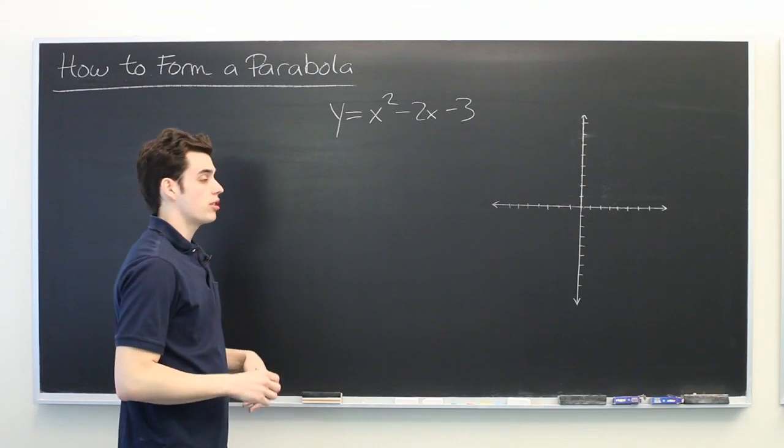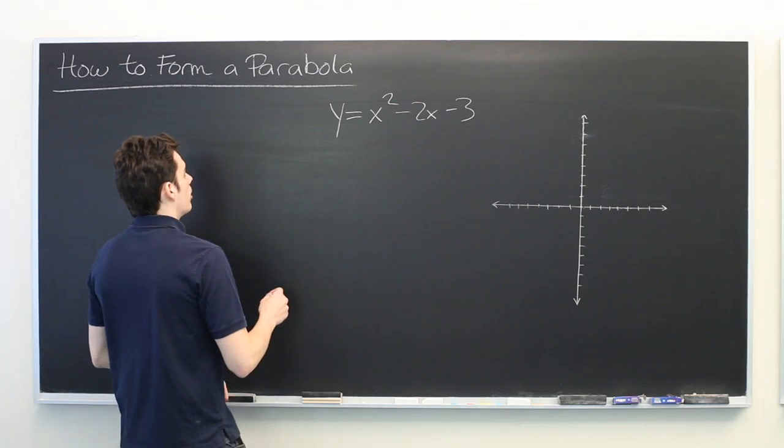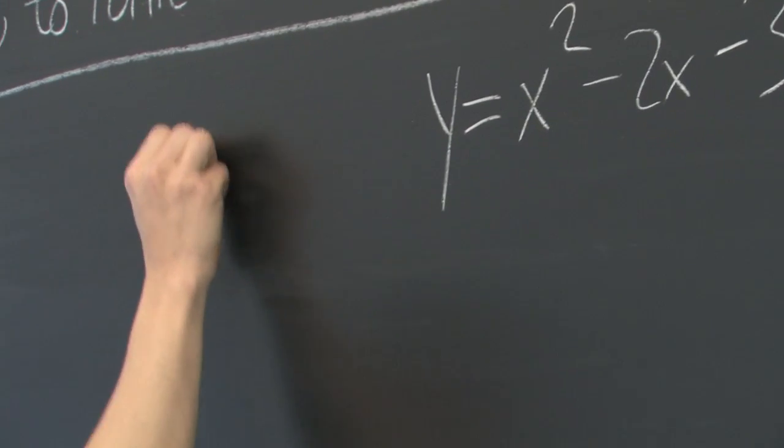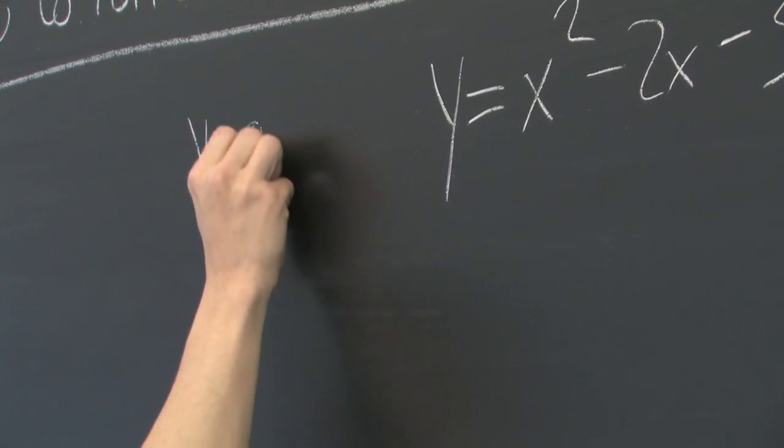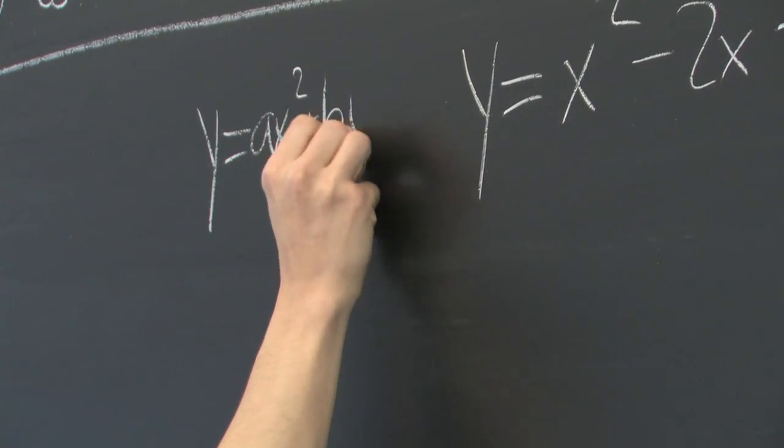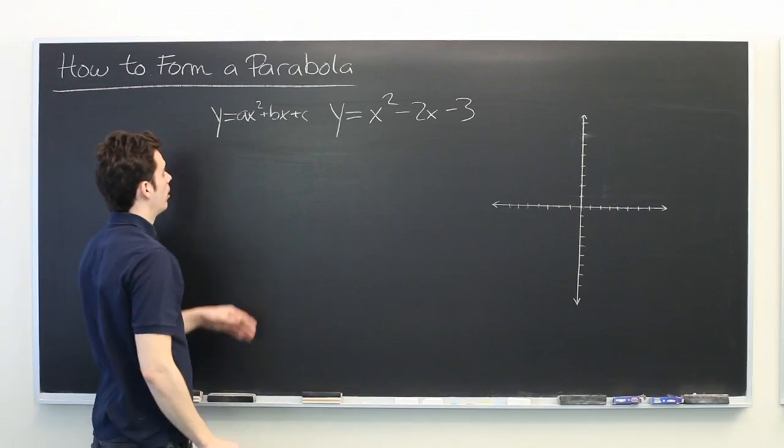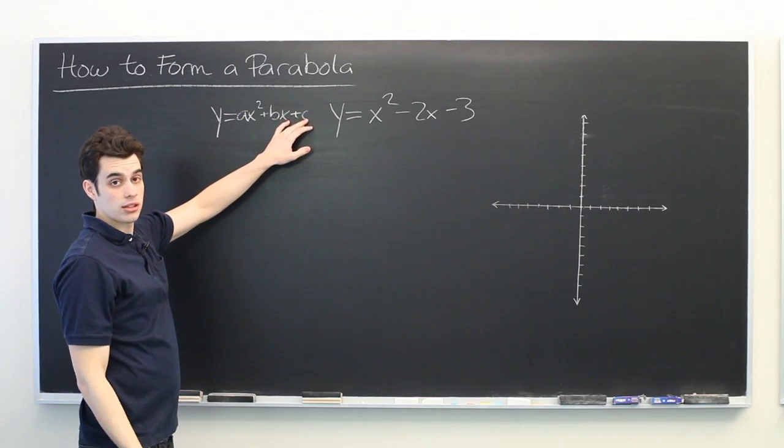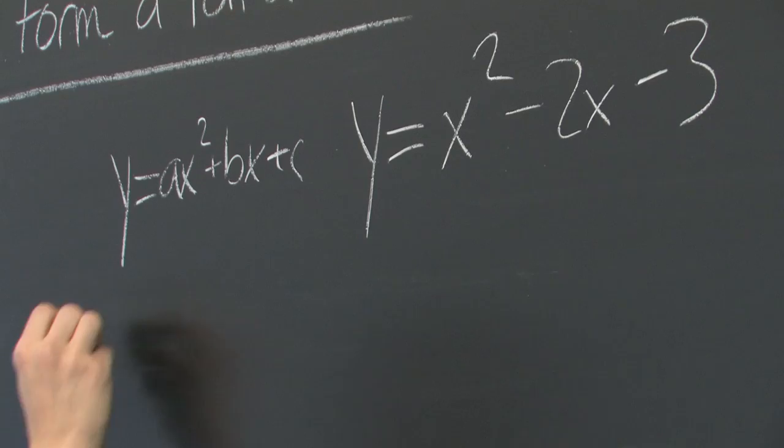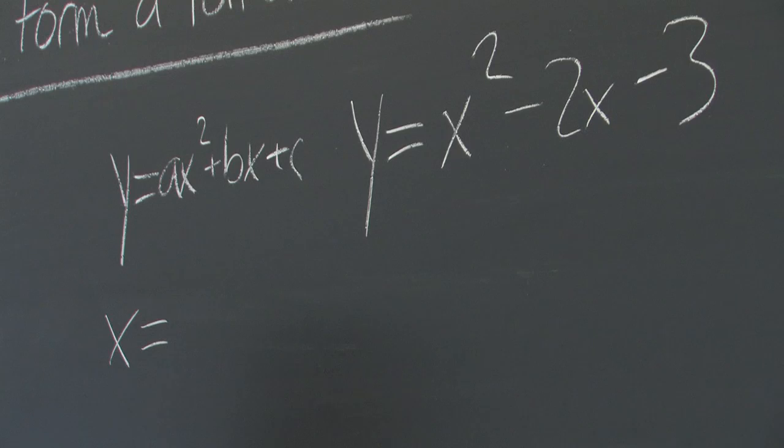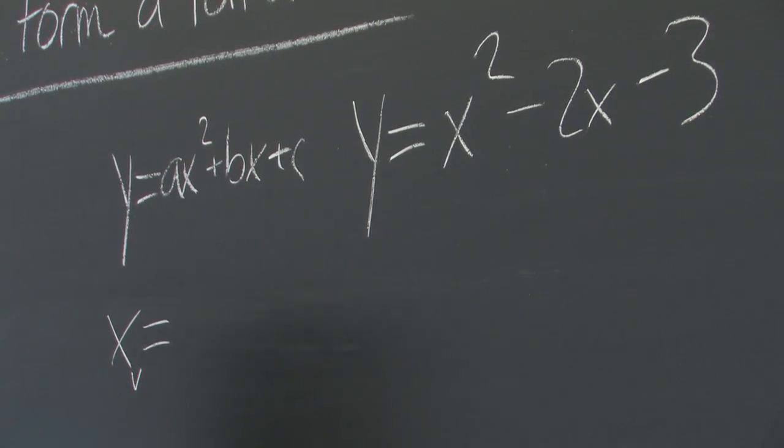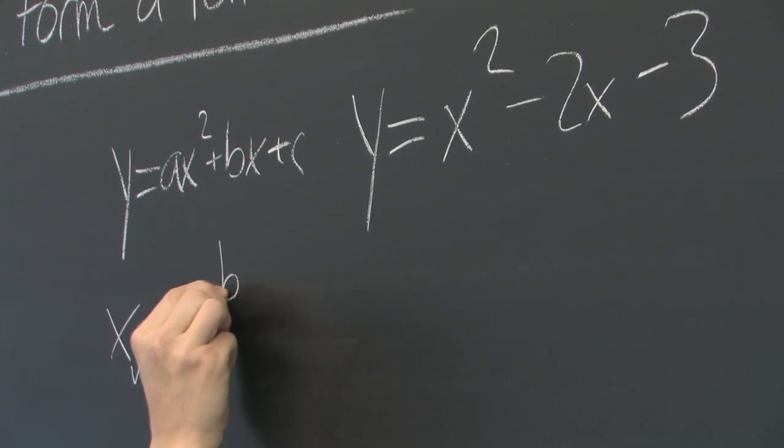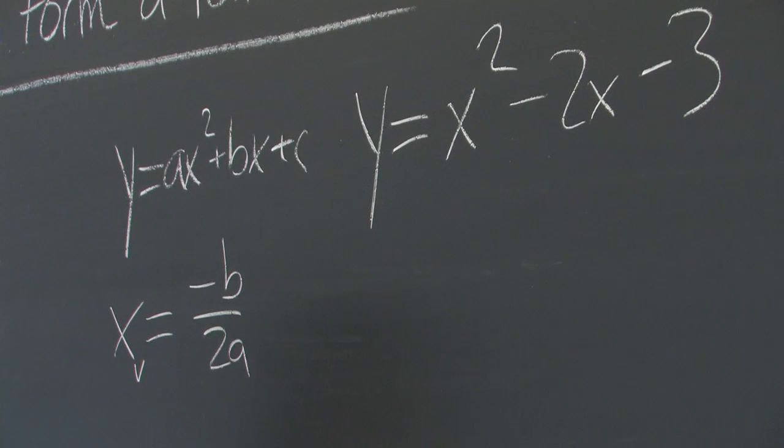The first is the vertex. In a parabola of the form y equals ax squared plus bx plus c, where a, b, and c are constants, the x coordinate of the vertex, we'll call it xv, is given by negative b over 2a.